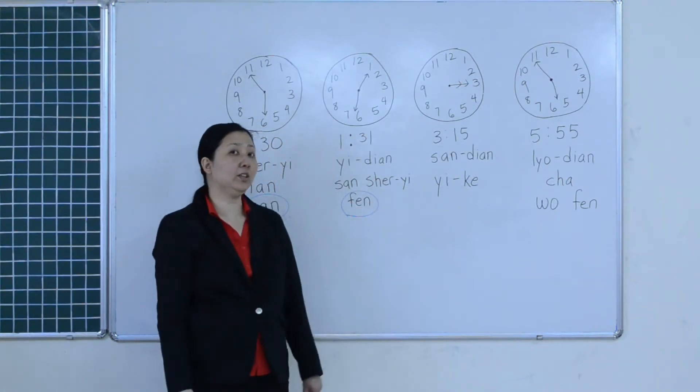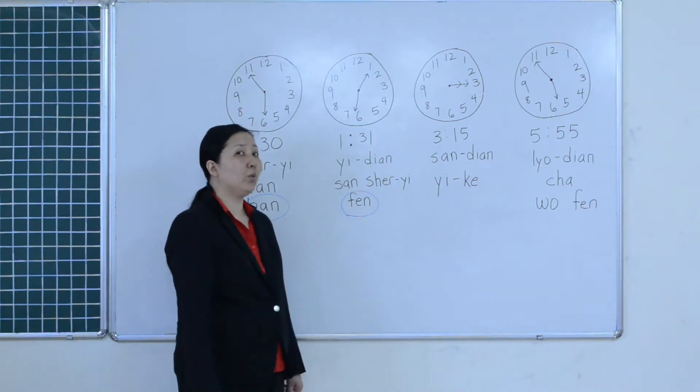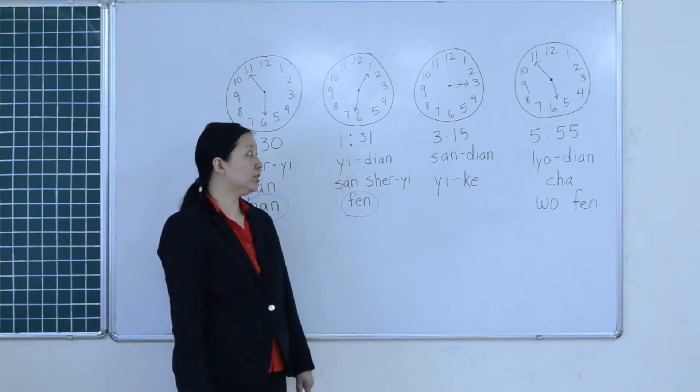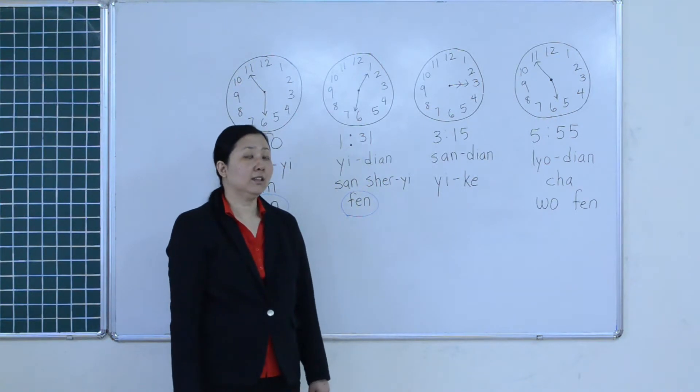分 is over here. So when you say 1:31, you say 一点三十一分.